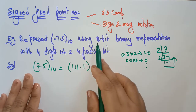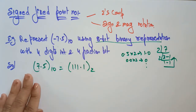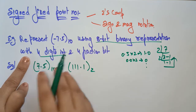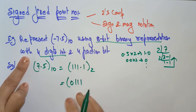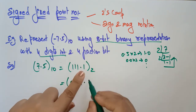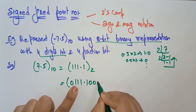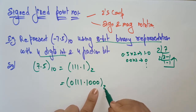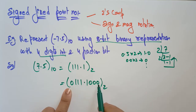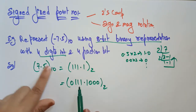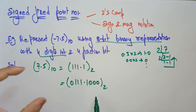Now convert this into the 8-bit binary representation with 4 integer bits and 4 fraction bits. The integer part becomes 0 1 1 1 — pad with a leading zero on the left. The fraction part is 1 0 0 0 — pad with trailing zeros. So the full 8-bit representation is 0111.1000. That is 4 + 4 = 8 bits.